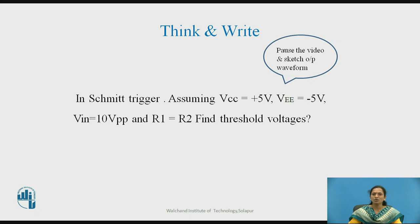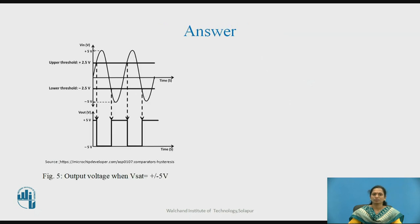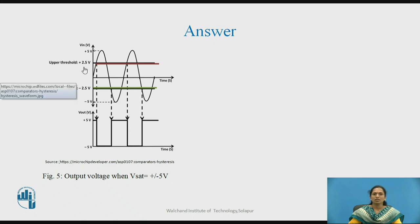Pause the video and draw the output waveforms. This is the output for the given condition. These are the two threshold values. Keep in mind: as Vsat is defined and R1 and R2 values are equal, you will get the threshold voltage at half of Vsat.